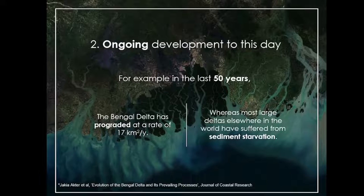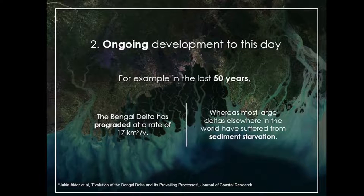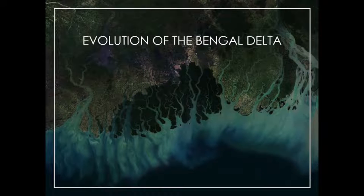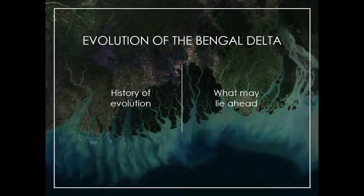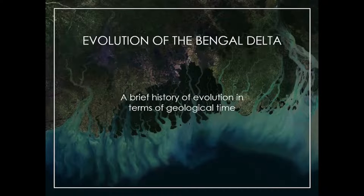Secondly, the delta building process is still ongoing to this day, which is rather uncommon for deltas of this size. On top of that, most of the morphological changes occurring now are of decade scale, which means we might be able to observe the future of the delta in our lifetime. These continuous changes are what we are going to discuss today — the evolution of the Bengal Delta, how it has evolved through geological time and what it may evolve into in future. Due to the brief nature of our presentation, we will only focus on the major evolutionary events.